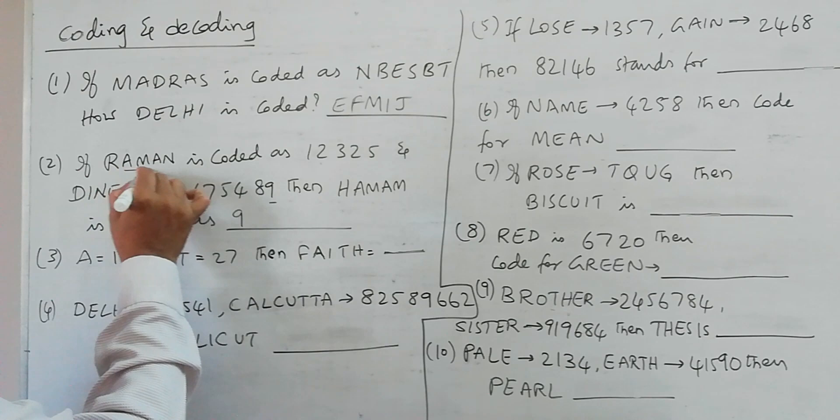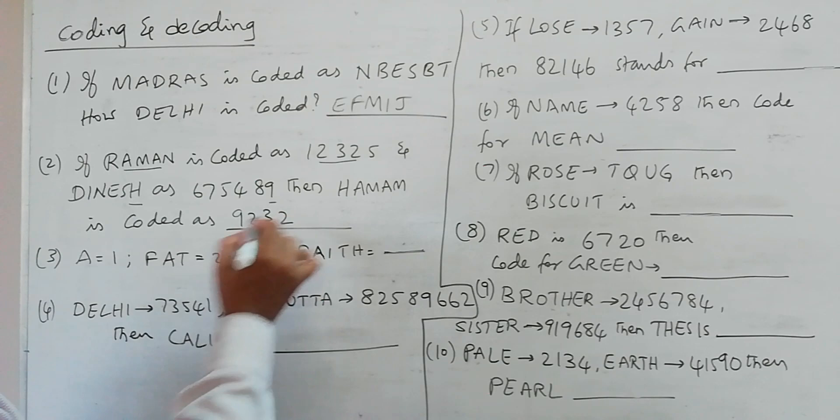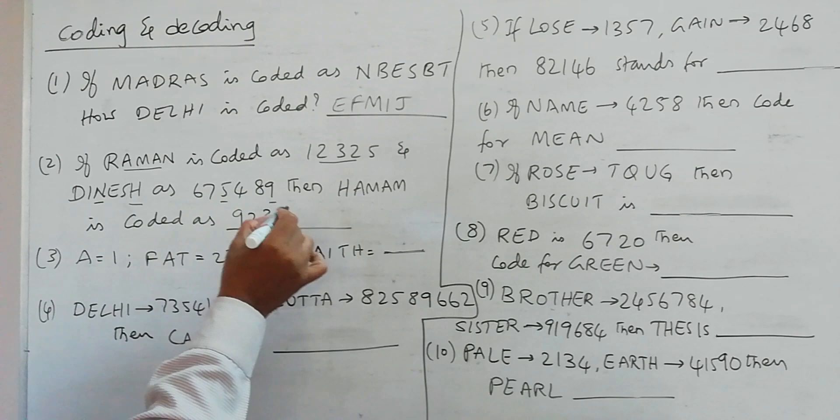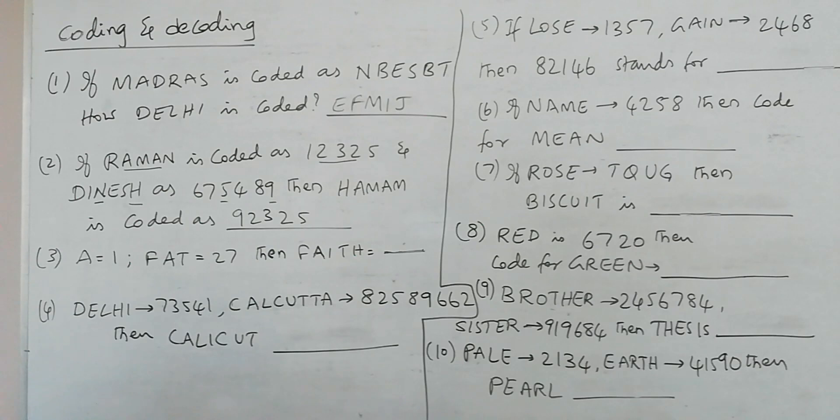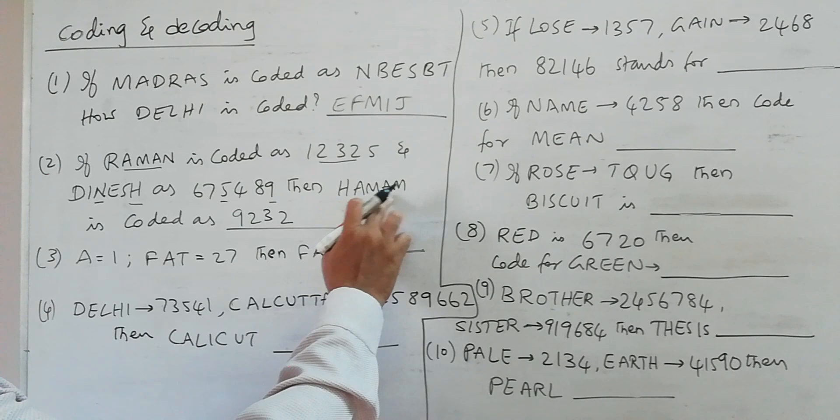That is 2-3-2, then N is the third letter here which is 5. So 9-2-3, M, so M in H-A-M-A-M, M is 3. So 9-2-3-2-3.